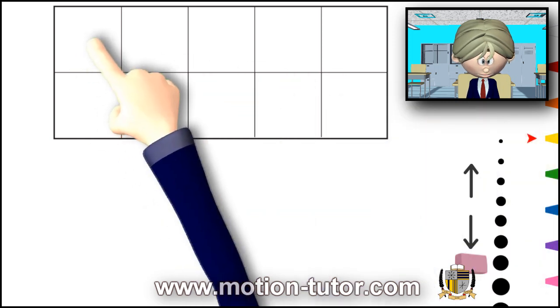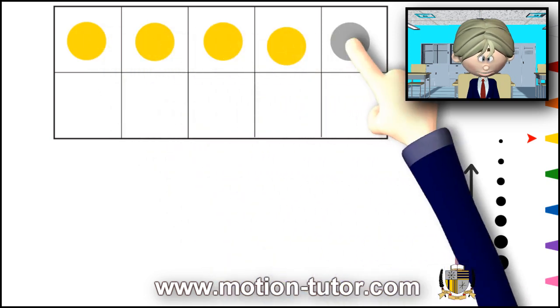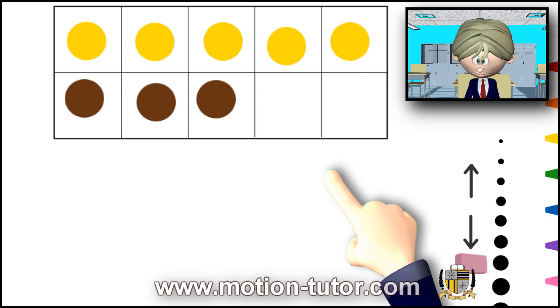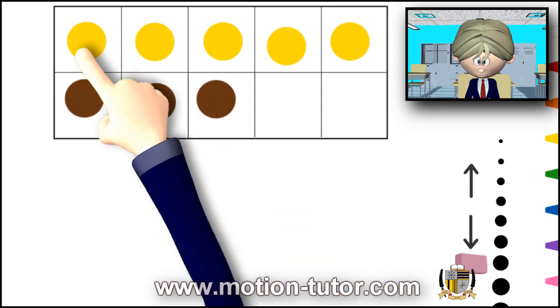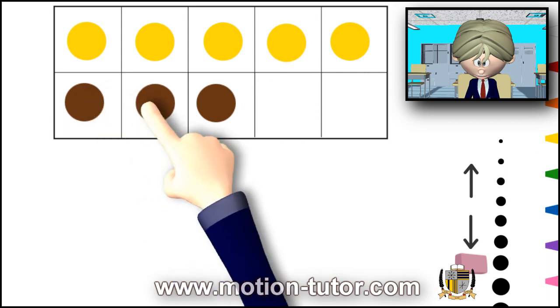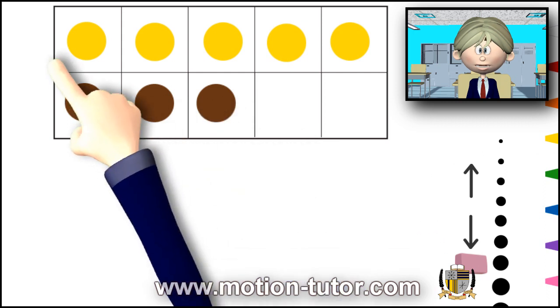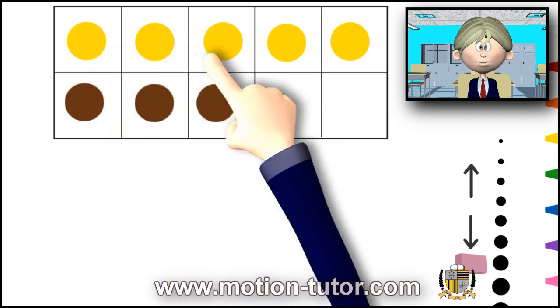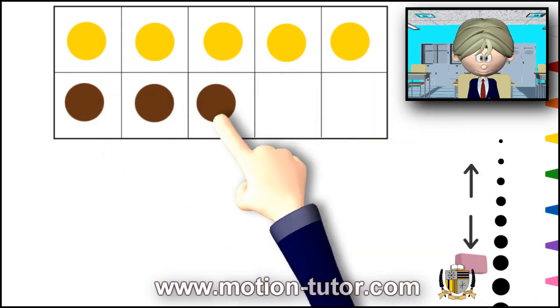I'll do another example. In this example, we have 1, 2, 3, 4, 5 yellows. And we have 1, 2, 3, 4, 5, 6, 7, 8. 8 all together.